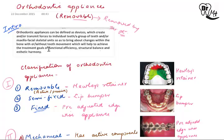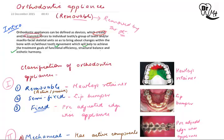These appliances help to achieve the treatment goals of functional efficiency, structural balance, and aesthetic harmony. Whenever we are doing orthodontic treatment we have these three goals. The appliances create or transmit forces to individual teeth or group of teeth and/or the maxillofacial skeletal units so as to bring about changes within the bone, with or without tooth movement, so that these three treatment goals are met.